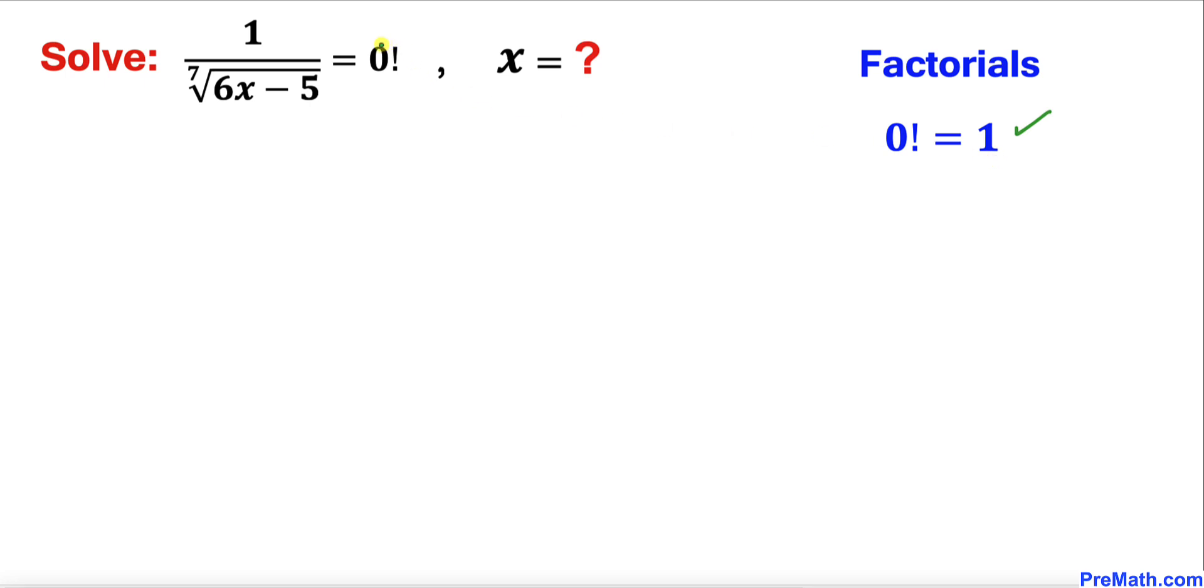Therefore, we are going to replace this 0 factorial by simply 1. So on the right hand side, 0 factorial has been replaced by 1 and the left hand side is the same.